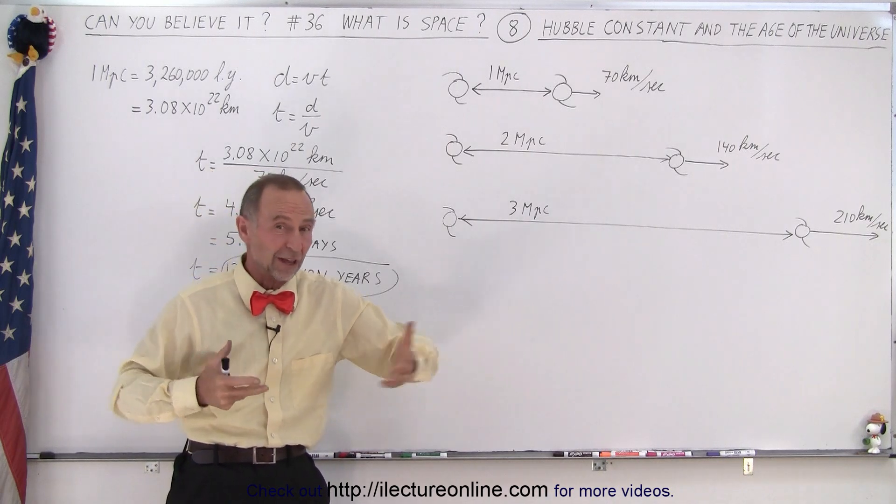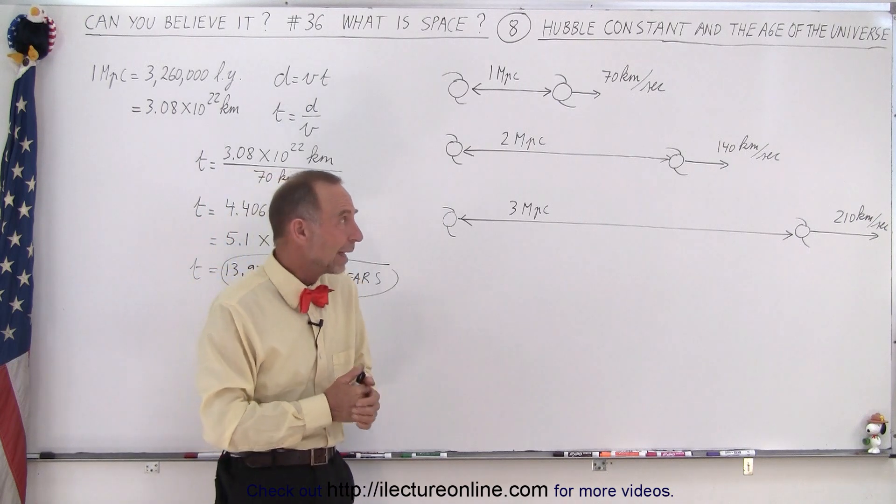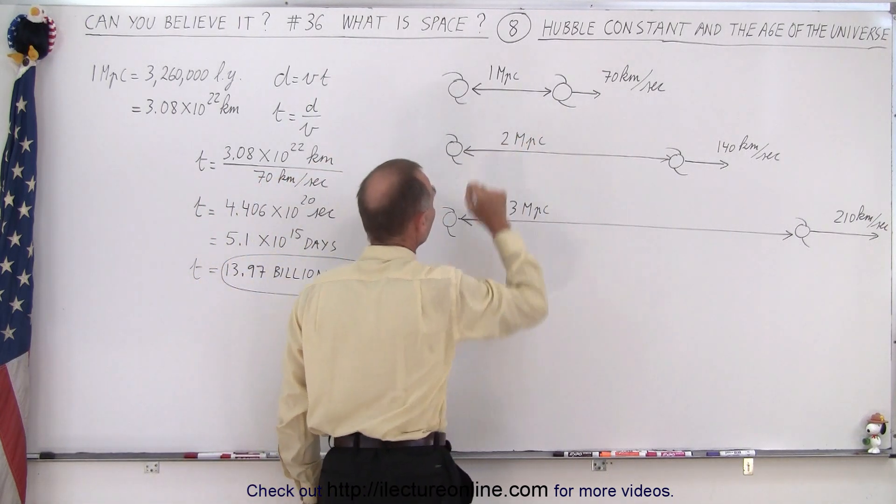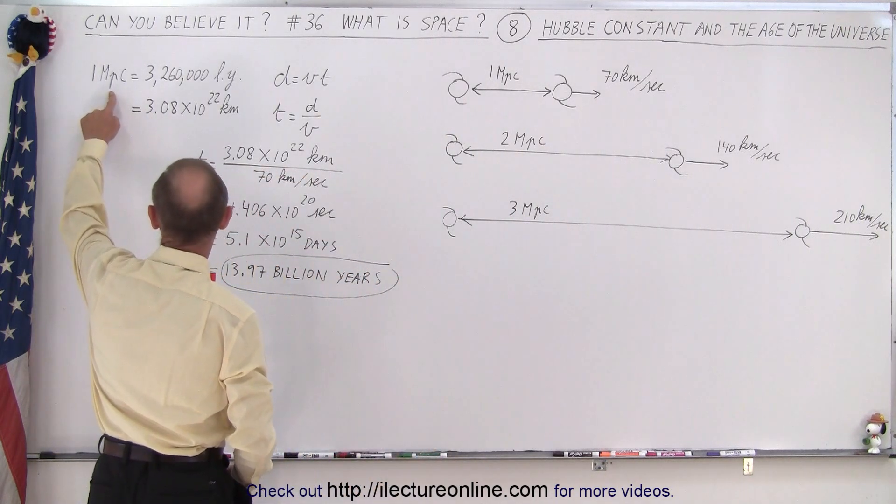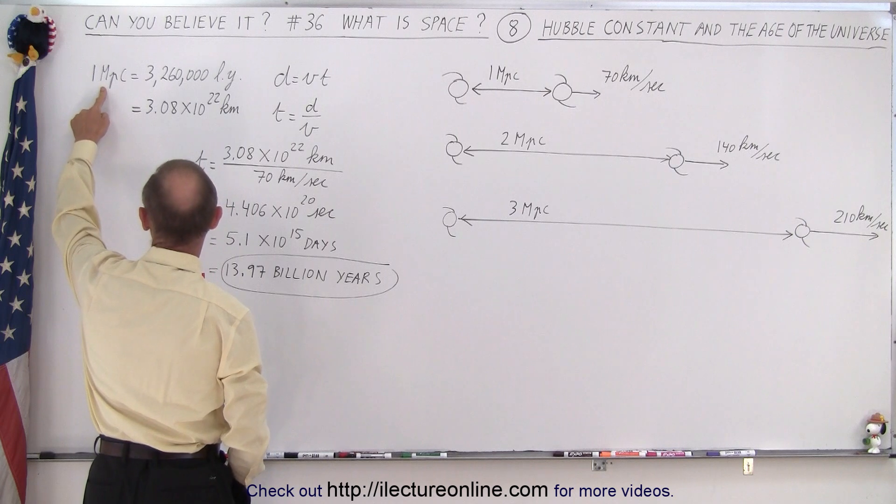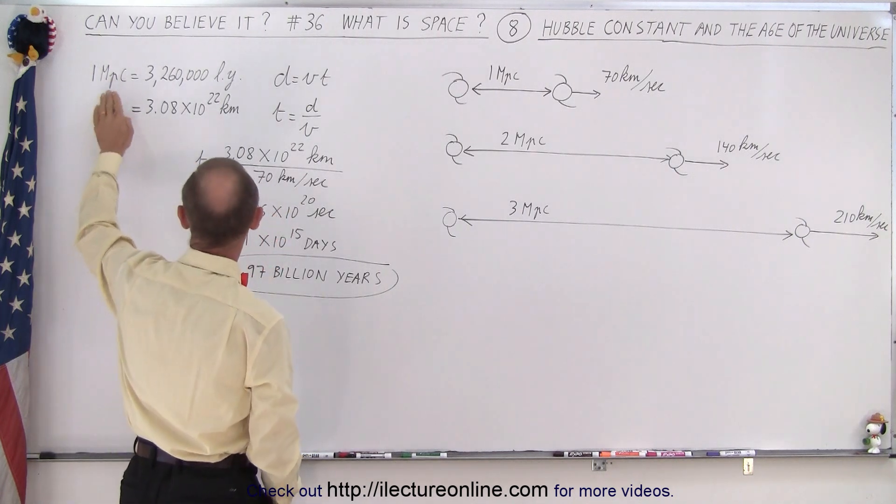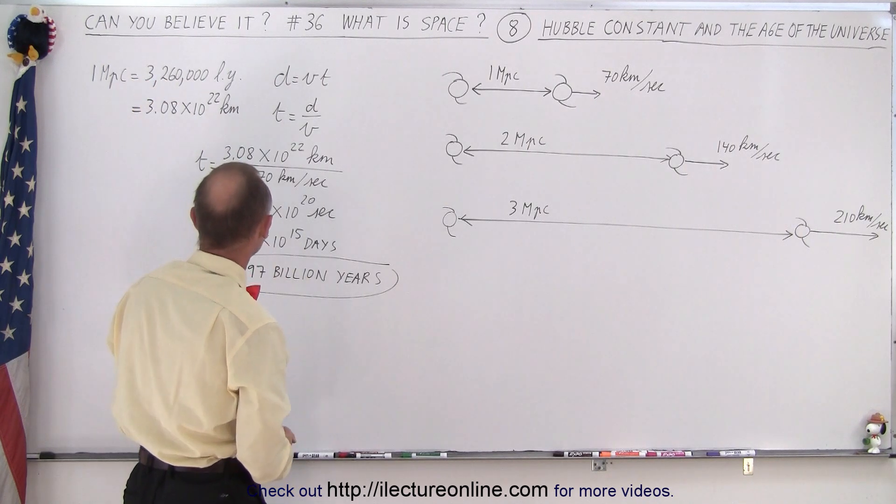Twice as far, twice as fast, three times as far, three times as fast, just like we saw in the previous video. And here to illustrate, for example, if we have two galaxies that are one mega parsec apart. Again, what is one mega parsec? Well, one mega parsec, mega means million and parsec is 3.26 light years. So one million parsec is 3.26 million light years away from us.